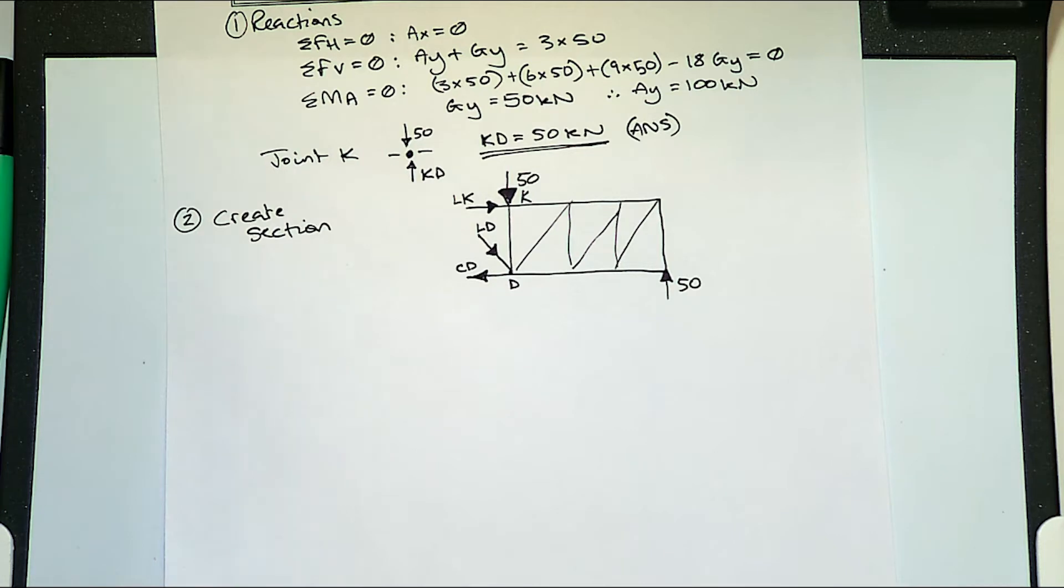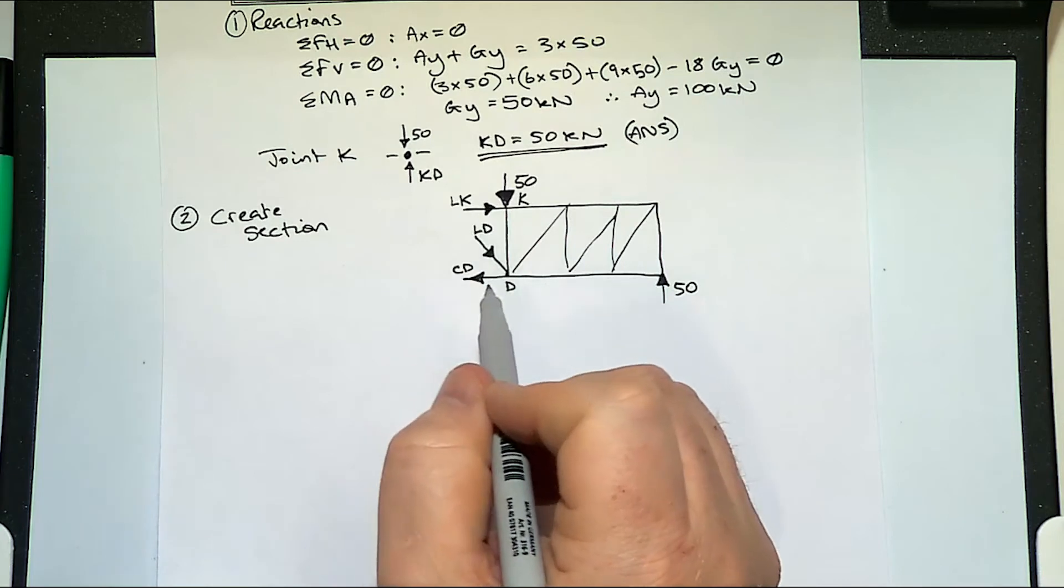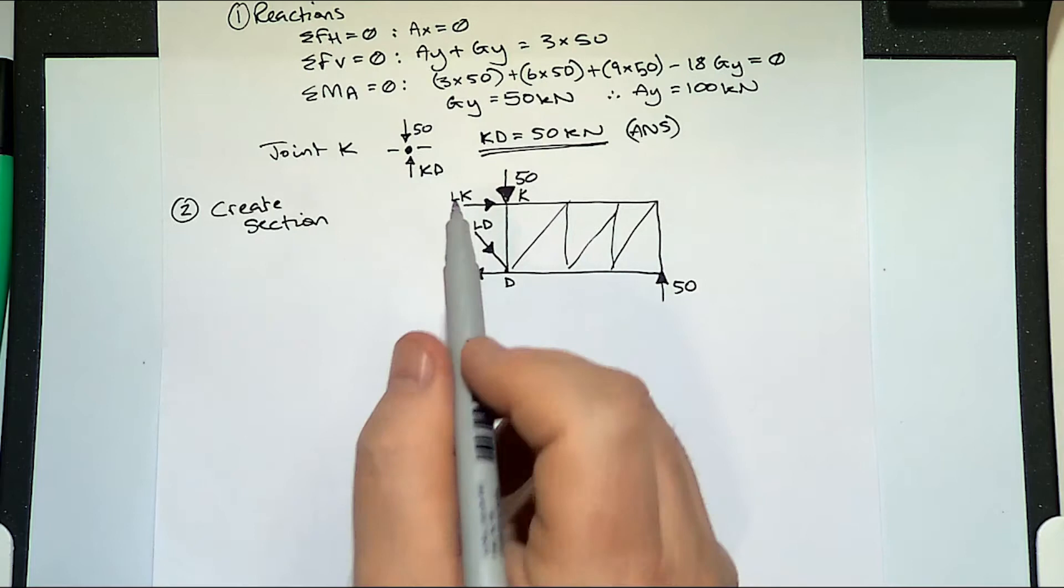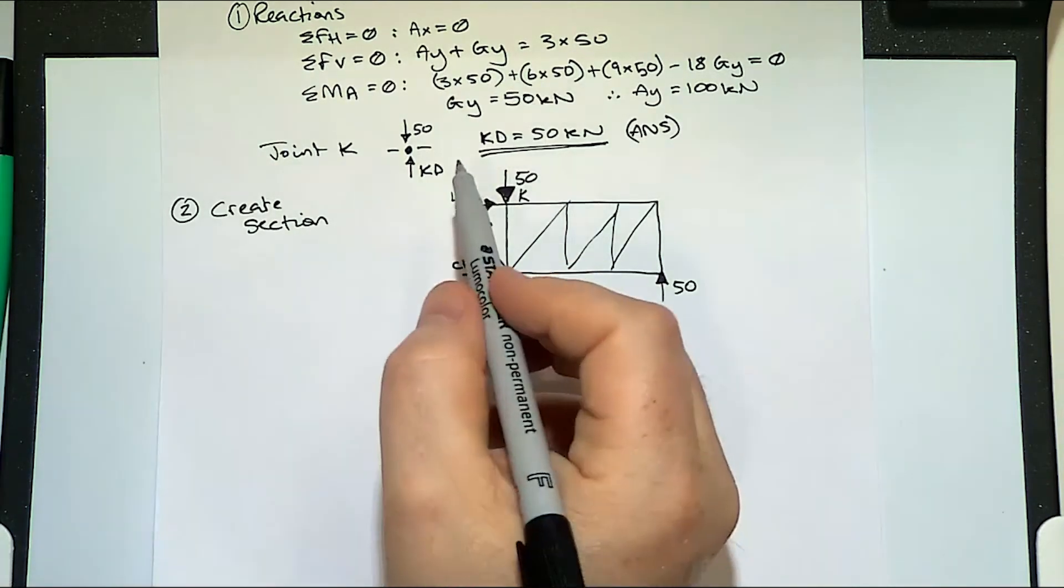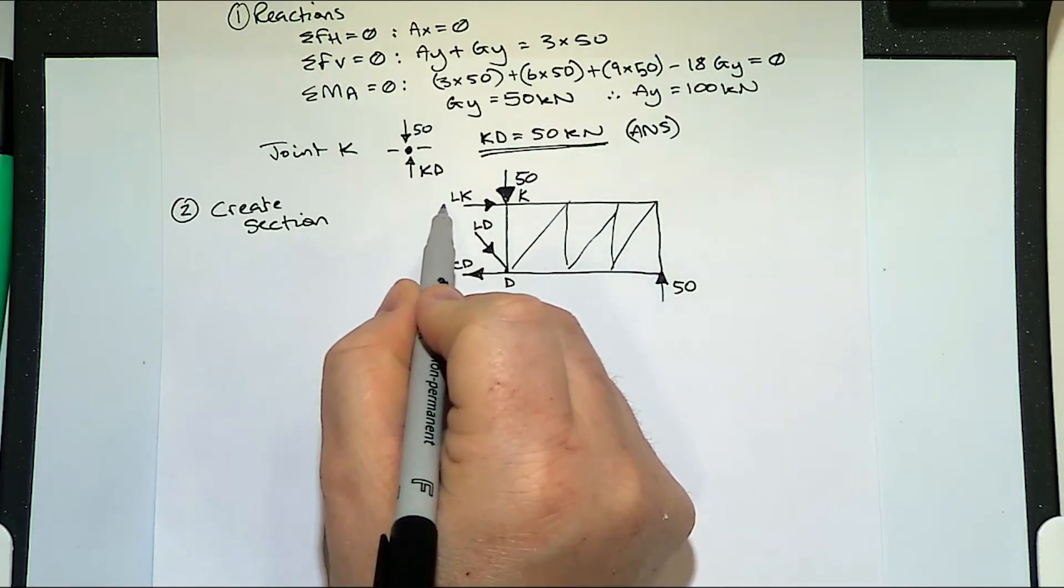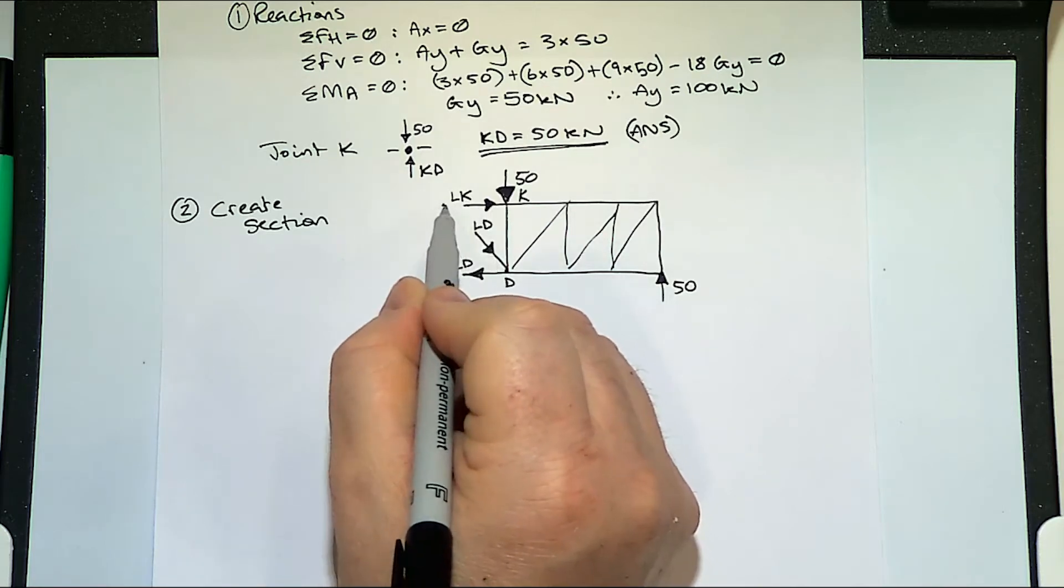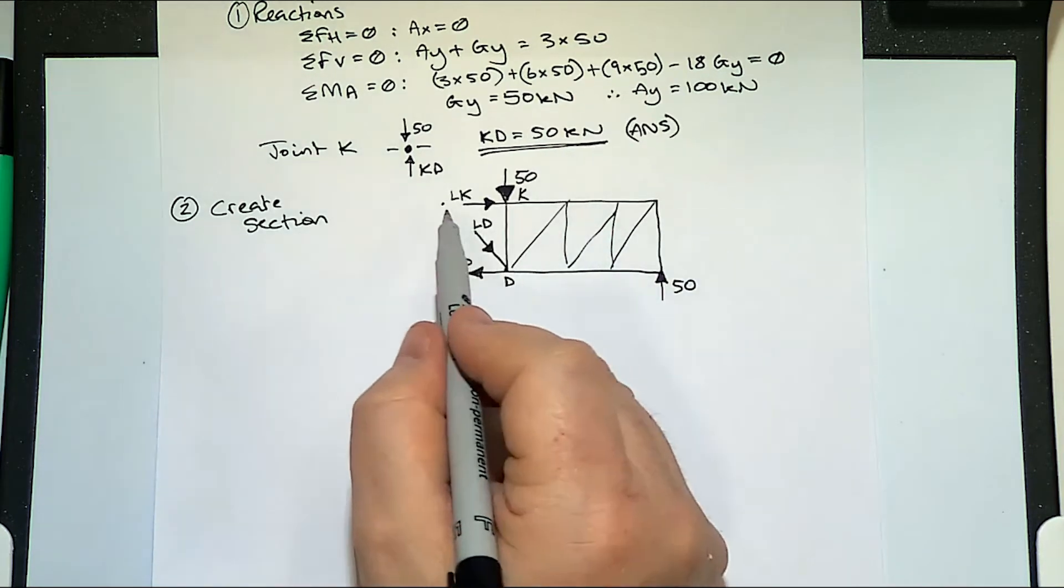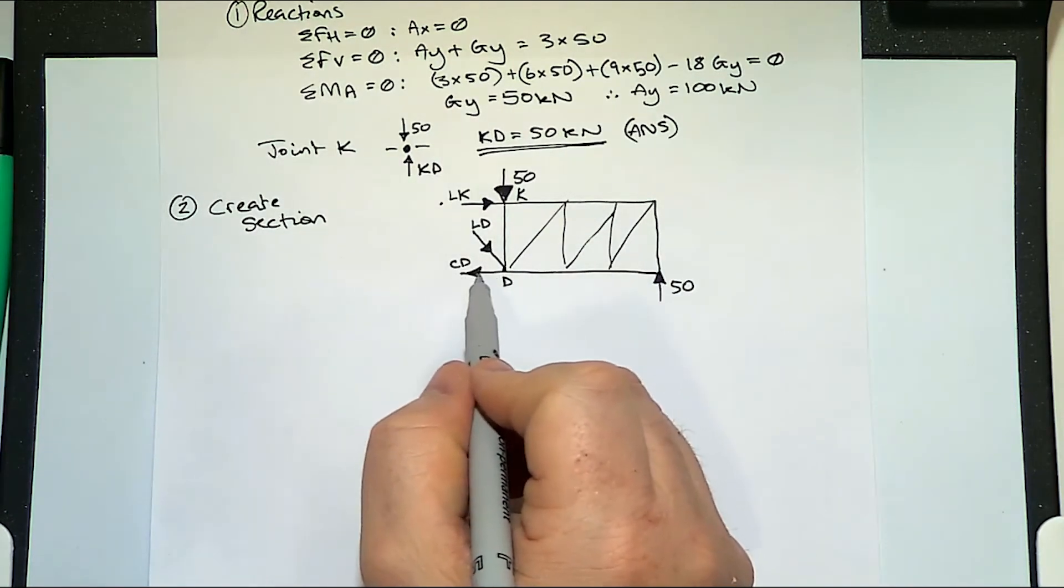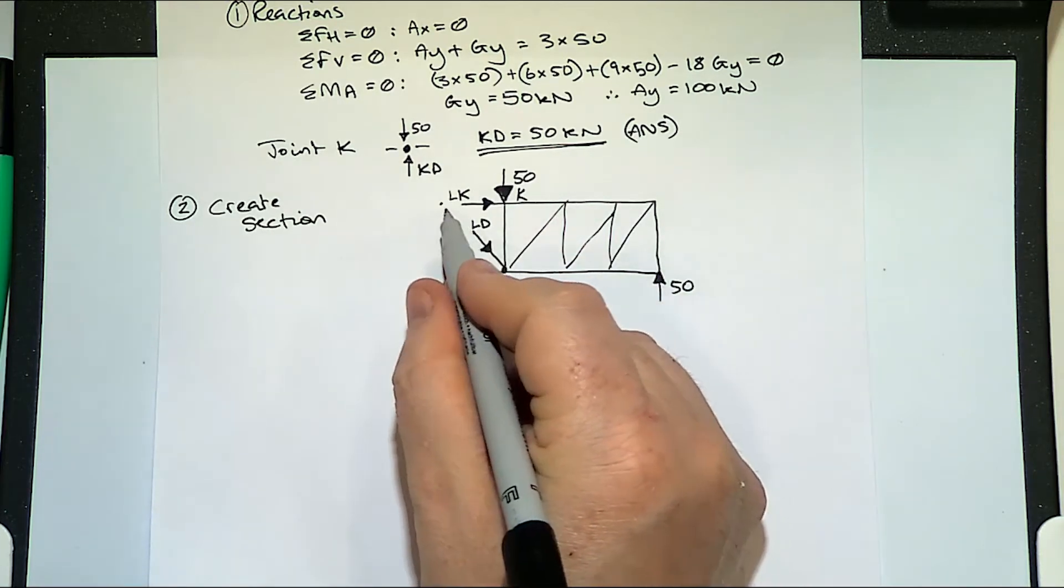Where would you be taking moments around? Because to try and remove two or more unknowns these are the unknowns that we have: CD, LD and LK. If you took moments around this point L, even though it's not on the frame, that would take out this LK and LD so therefore you'd end up with this 50, this 50 and this CD. You could also take moments around D which would take out LD and CD.